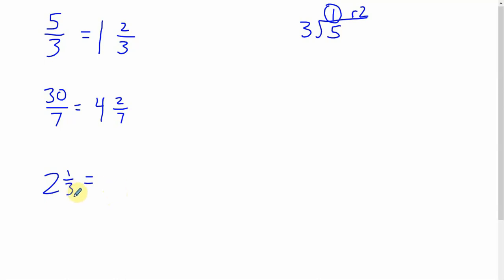And the way you do that is, the easiest way I think is, the denominator never changes when you're doing these conversions. So we're still going to be thirds. We're going to have a number here that's bigger than three now. And what you do is you multiply two times three, and then you add one. So three times two is six plus one is seven, seven thirds.